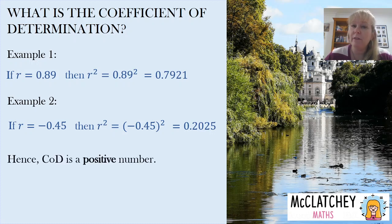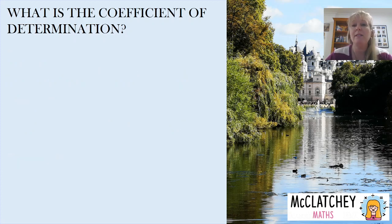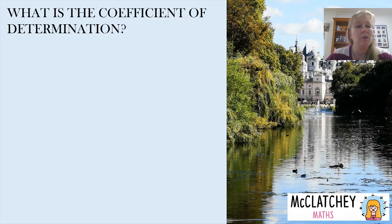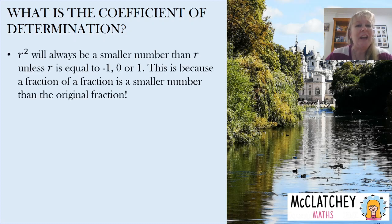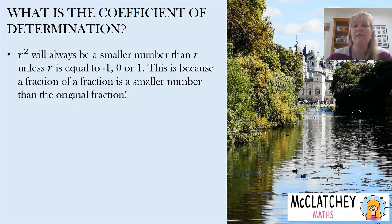The COD is going to be a positive number between 0 and positive 1, so if you find anything outside that range, like negative 100 or positive 100, you know you're on the wrong track. R squared is always going to be a smaller number than R, unless R is equal to negative 1, 0, or 1.